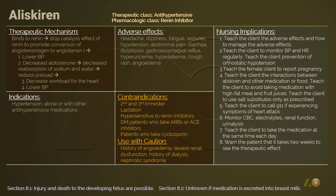We need to stop the medication and use alternative medication as soon as possible. Teach the client the interactions between aliskiren and other medications or food. Fruit juice and high-fat meals could decrease the therapeutic level of aliskiren. Teach the client to use salt substitutes only as prescribed. Teach the client to call 911 if experiencing symptoms of heart attack. Monitor CBC, electrolytes, renal function, and urinalysis, because this medication could cause electrolyte imbalances and affect renal function.